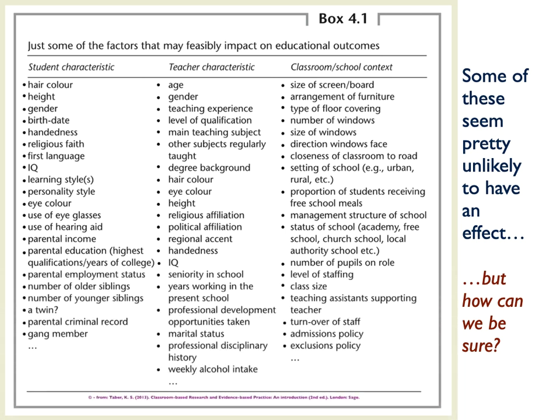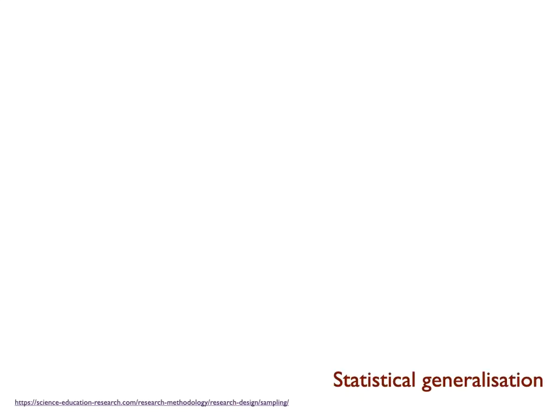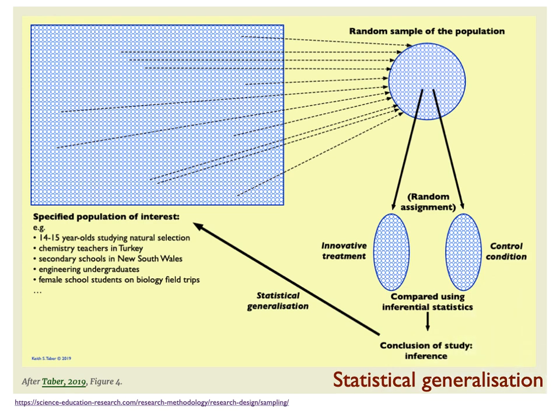In the case of an educational experiment, we often cannot identify all the variables which might have an effect. Even when we can identify them, we often do not know how to meaningfully measure them, and even if we can measure them, we may not have a way of holding them at a constant value. That need not prevent experimental studies where you have large enough samples that are representative of a population to assume that statistics can tell you whether outcomes are unlikely to be due to chance factors. It is a problem, however, in studies with small unrepresentative samples — and most published experiments in the educational literature have small unrepresentative samples.